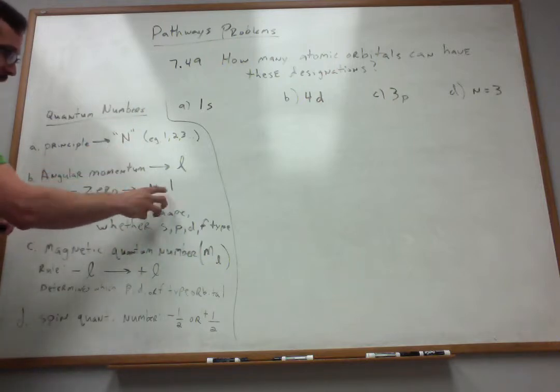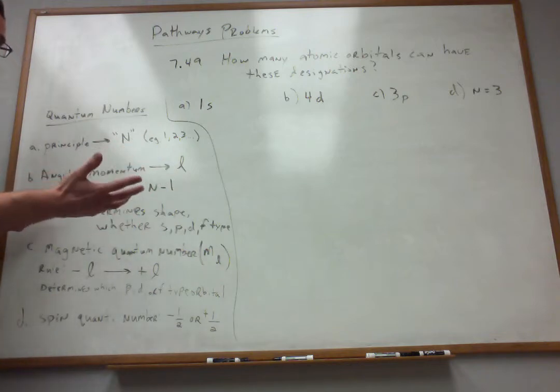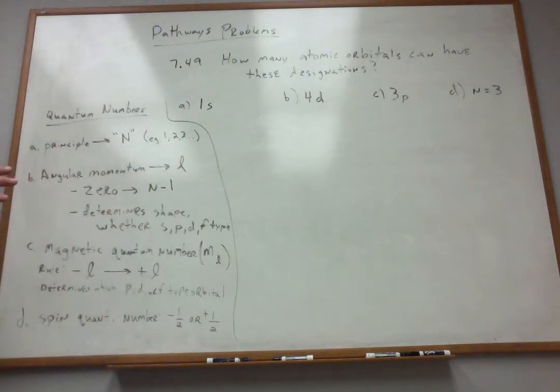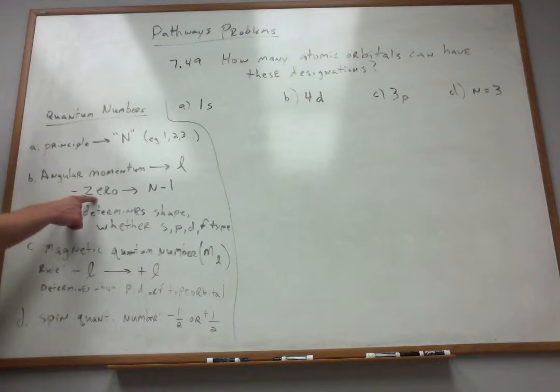And N is 3. N minus 1 is 2. So 0, 1, and 2 are allowed. But that's it. So the angular momentum number is an integer starting at 0, going all the way to N, the principal number minus 1.